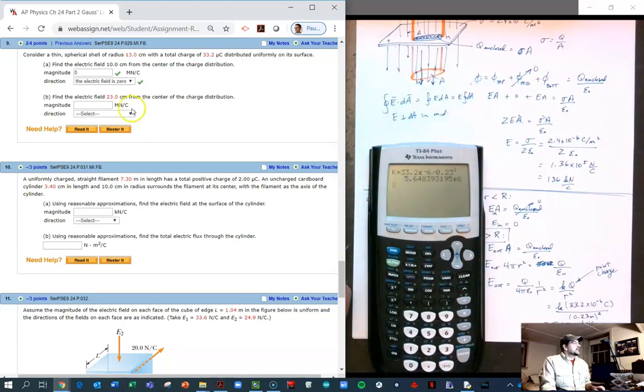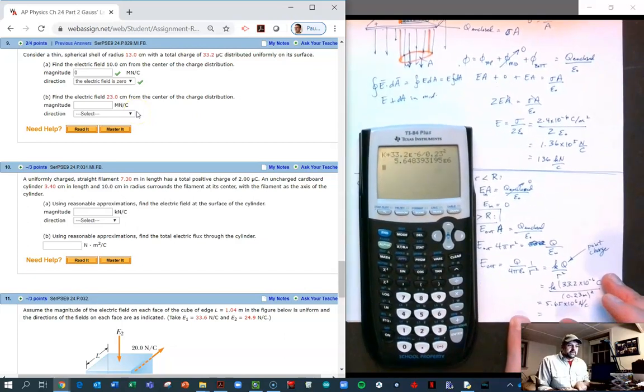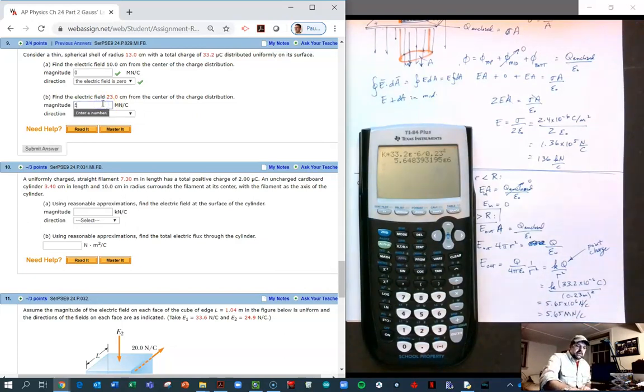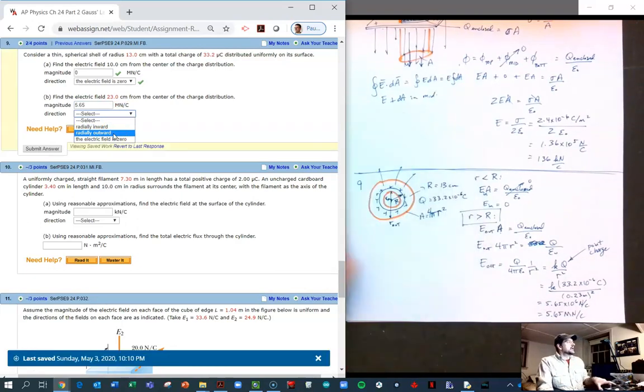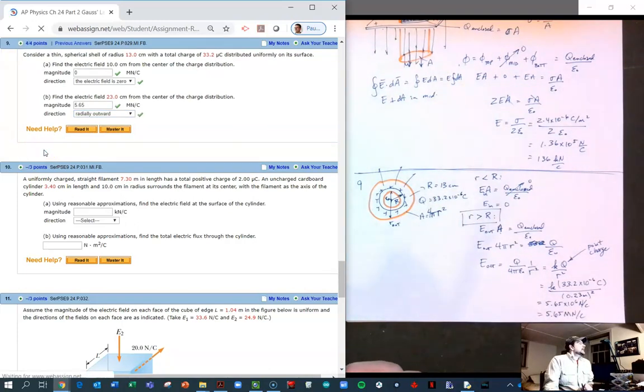So K times 33.2 E minus 6 divided by 0.23 squared. But the units is looking for mega newtons per coulomb, and mega is 10 to the 6, so that's just simply 5.65 mega newtons per coulomb. Let's type that in, 5.65. The direction of this is radially outward because our charge distribution is positive. Yay! One more down.